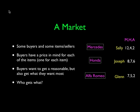Here's an example of a market where we have three people — Sally, Joseph, and Glenn — and we have three items: a Mercedes, a Honda, and an Alfa Romeo. Each buyer has a value for each of the items. Sally values the Mercedes at 12, the Honda at 4, and the Alfa Romeo at 2. Joseph is interested in both the Mercedes and the Honda, leaning toward the Mercedes but not wanting to spend quite as much. Glenn values the Mercedes at 7, the Honda at 5, and the Alfa Romeo at 2.